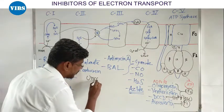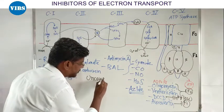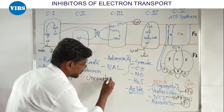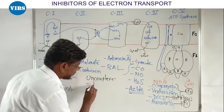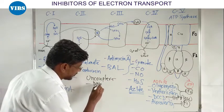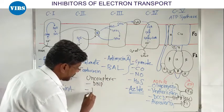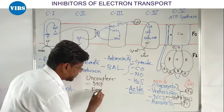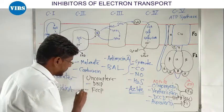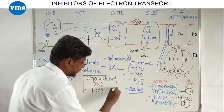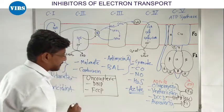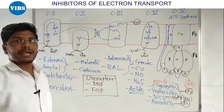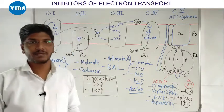DCCD, DNP, and FCCP — DNP and FCCP are uncouplers. These uncouplers dissipate the proton gradient across the mitochondrial membrane, uncoupling electron transport from ATP synthesis.